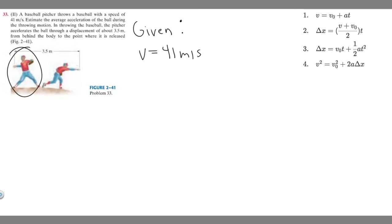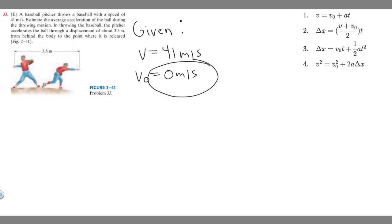At the start, the initial velocity, which we represent by V sub 0, is going to be 0 meters per second. Because it's right when it starts, he's not moving at all, so the ball isn't moving — it's going at 0 meters per second. We're also told he travels a distance of 3.5 meters, so delta x, the change in position, equals 3.5 meters.